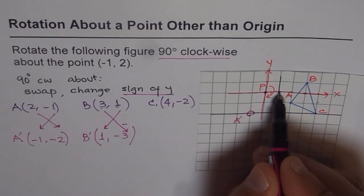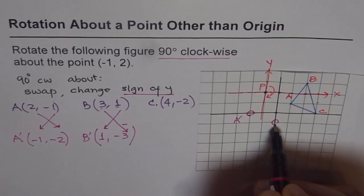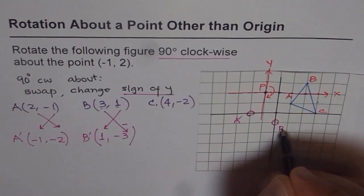1 unit, right? And 3 down. 1, 2, 3. That is what we get and this is the point B' for us.